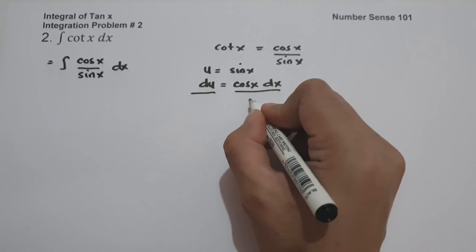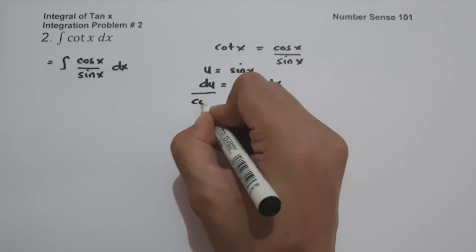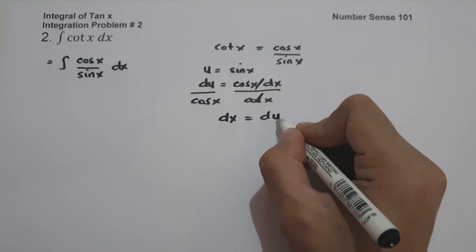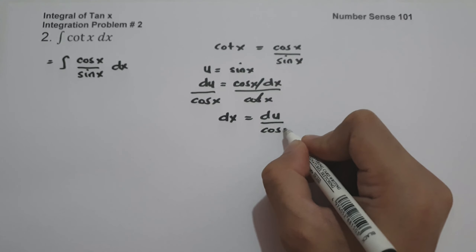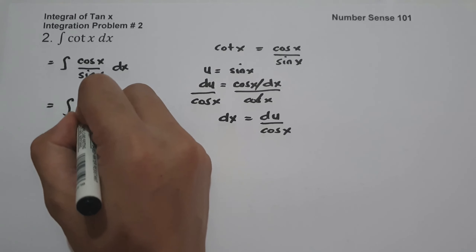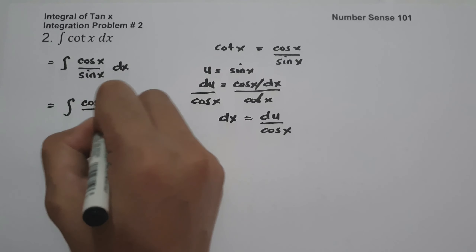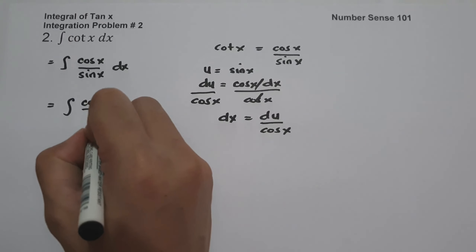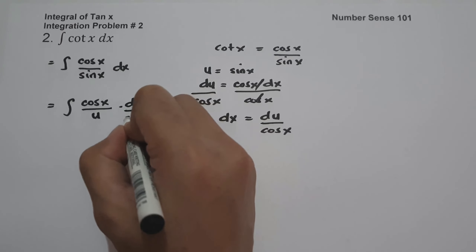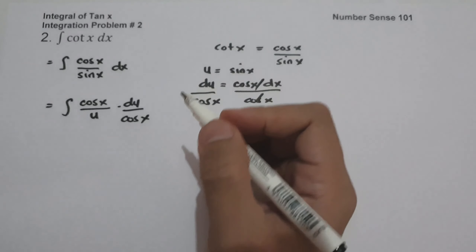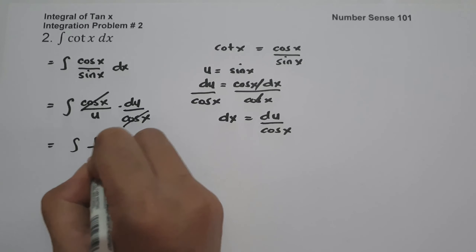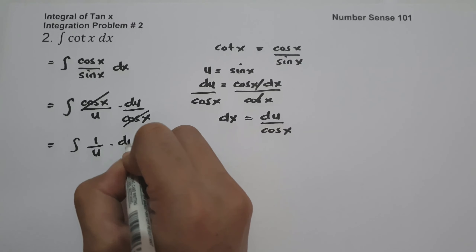So let us divide both sides by cosine x. So dx will be du over cosine x. Now let us have the antiderivative of cosine x divided by sine x — which is u — and dx, that is du over cosine x. We can cancel cosine x, and this will be the antiderivative of 1 over u du.